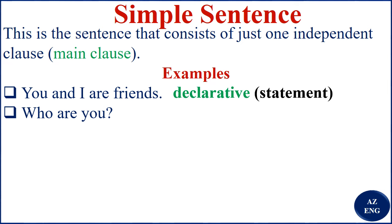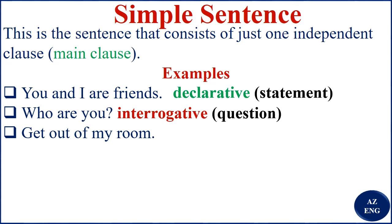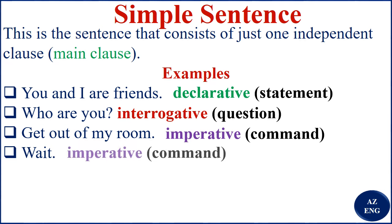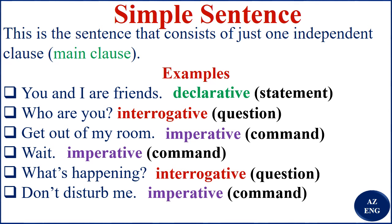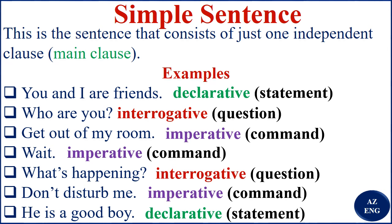'Who are you?' — you should be able to know this is a question, so it is interrogative. 'Get out of my room' — you should know this is imperative, meaning a command, instruction, or order. 'Wait' is also imperative. 'What's happening?' is interrogative — a question. 'Don't disturb me' is imperative. 'He is a good boy' is declarative — a statement.